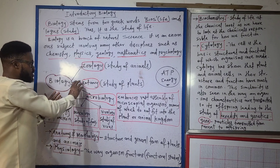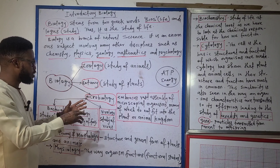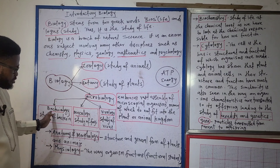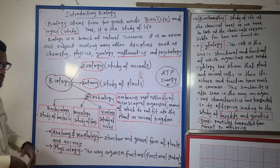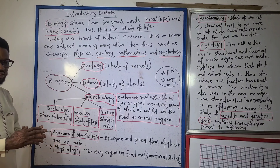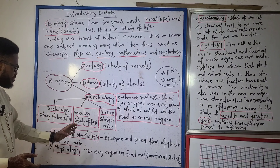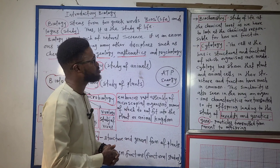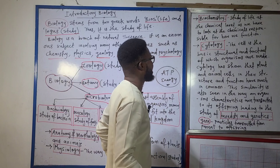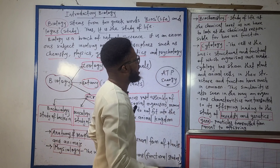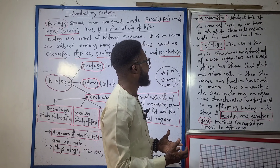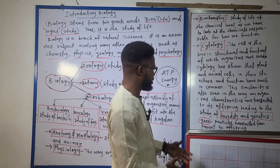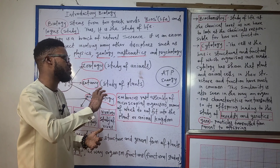To summarize: classifying biology only into zoology and botany is unnatural because it leaves out the vast assembly of microorganisms — hence we need microbiology, bacteriology, mycology and virology. We need structural studies — anatomy and morphology. Physiology covers functional studies. Biochemistry covers the chemicals that keep us alive. Cytology takes us to the cellular level, and heredity and genetics covers features being passed to offspring from parents.